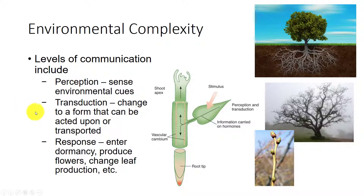Next, information must be transduced or changed to a form that can either be acted upon or transported. Finally, there must be a response. The plant must enter dormancy, produce flowers, change the type of leaf production, and so on. If any of these steps is missing, the plant cannot respond to the environment.